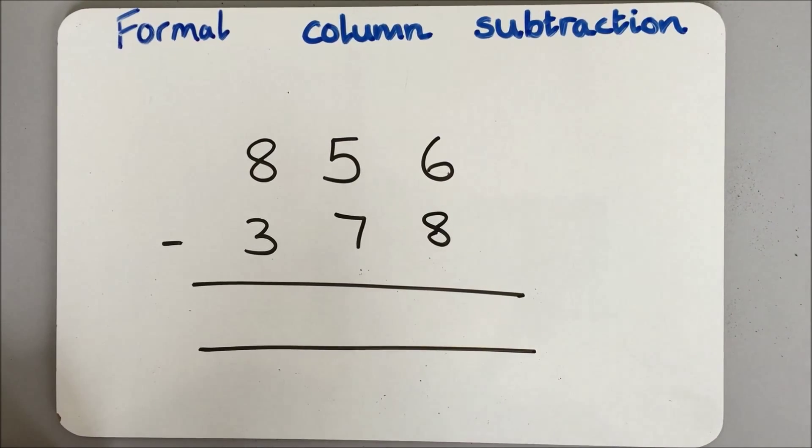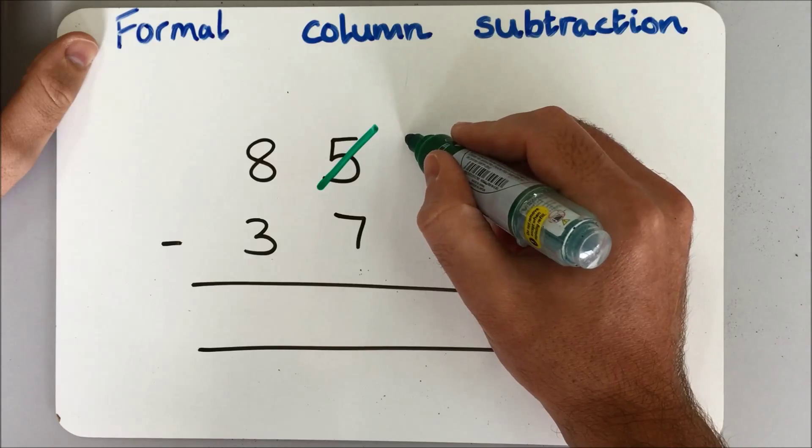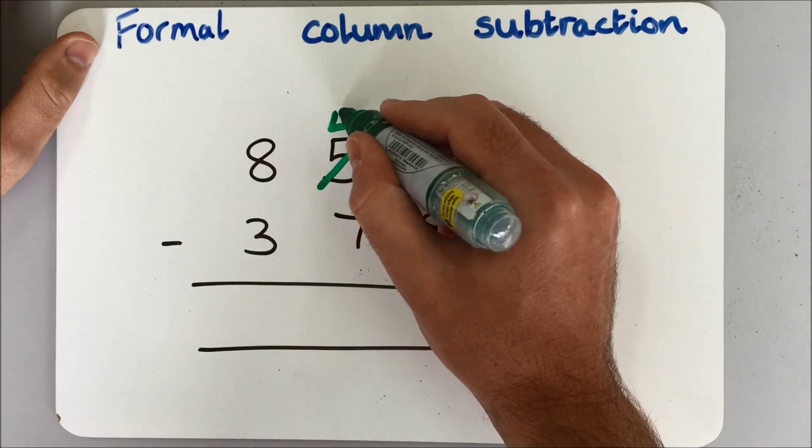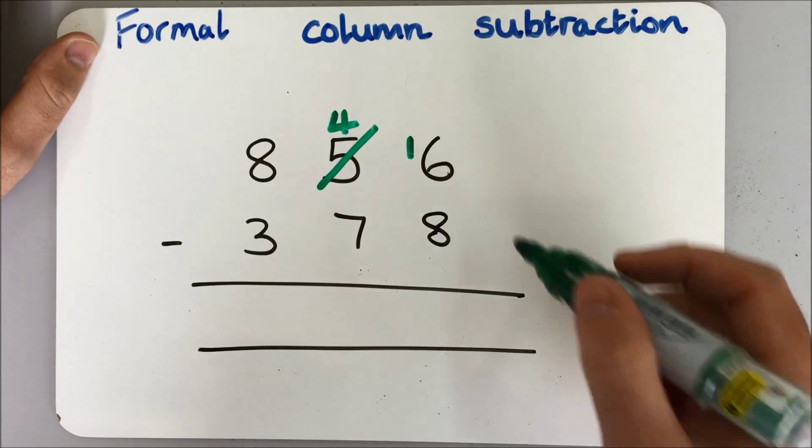Possibly the last and most efficient is the formal column subtraction method. For this we will be needing to exchange as well.